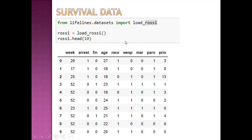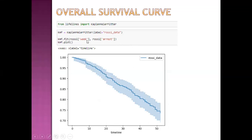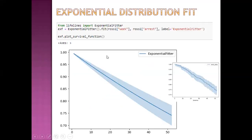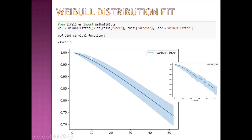We load the data using Python code, then plot the Kaplan-Meier survival curve. The survival curve and cumulative hazard function are shown, along with exponential and Weibull fittings. The Kaplan-Meier curve and exponential fitted curve are both similar with slight difference at the start. Weibull distribution fitting is also very similar to the original Kaplan-Meier curve. So both exponential and Weibull distributions fit the data.